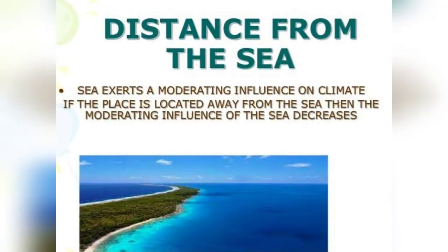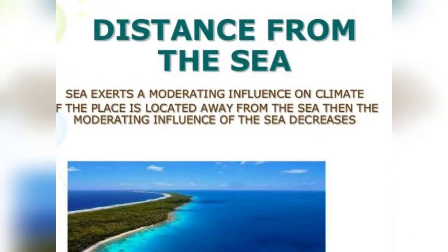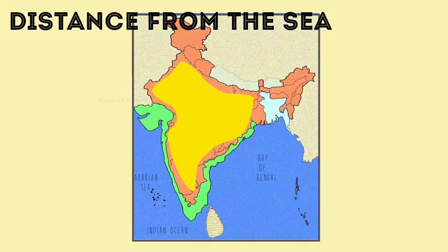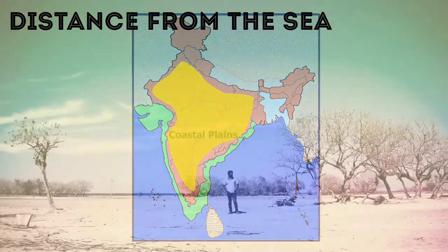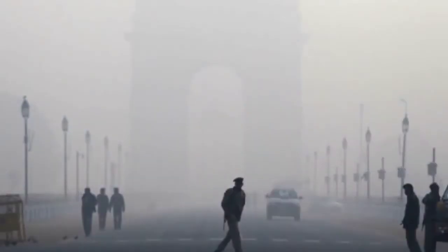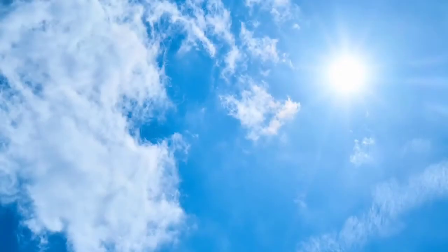The next factor is distance from the sea. The Indian landmass is surrounded by the Indian Ocean, Bay of Bengal, and Arabian Sea. Places situated near the sea have a moderating climate, while places located in the interior parts experience a very continental type of climate — meaning summers are too hot and winters are too cold, with very high daytime temperatures and very low night temperatures.